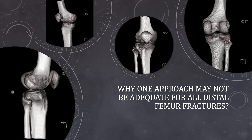Because of the peculiar anatomy of the distal femur. For plate placement we have the posterolateral surface and the posteromedial surface, then the lateral surface, then the medial surface. The anterior part is not available for plating because it forms the articulation with the patella to form the patellofemoral joint. So the lateral, medial, posteromedial, and posterolateral surfaces are wide apart.